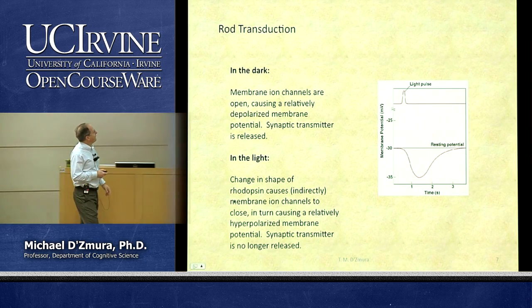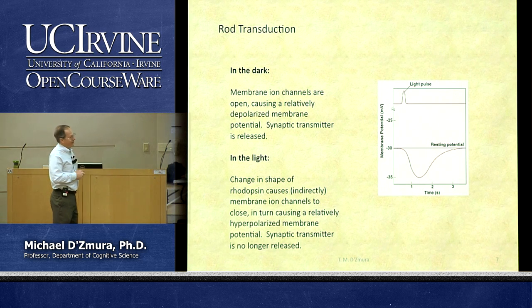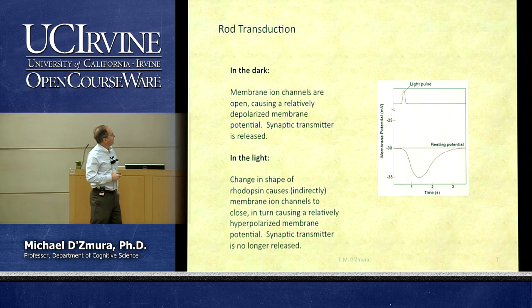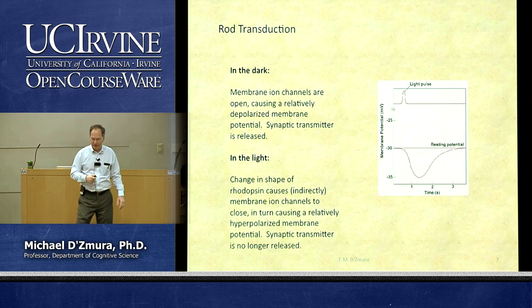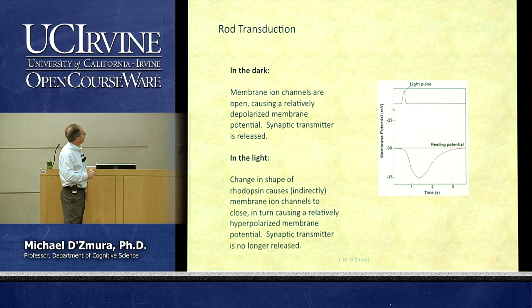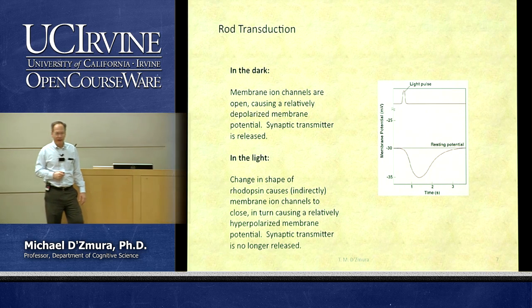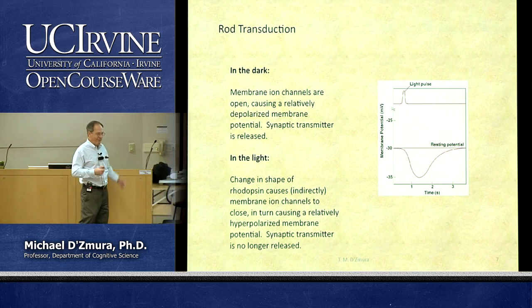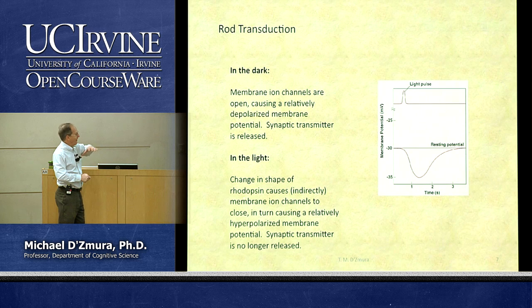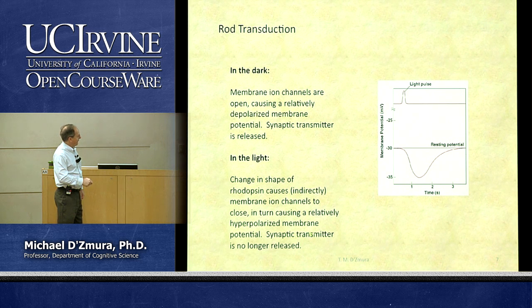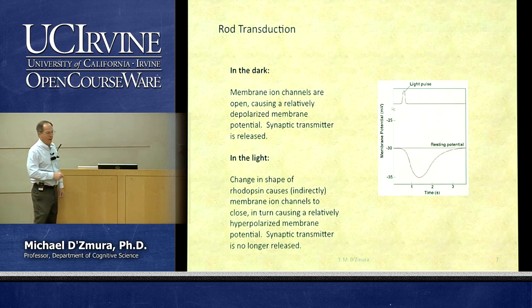In the dark, membrane ion channels are open because of the presence of cyclic GMP molecules. That means positively charged ions are entering the cell in the dark, so the cell is relatively depolarized in the dark. The result is that synaptic transmitter is released by the rod in the dark. When we shine a light, photons are absorbed, retinal changes shape, and membrane ion channels close, so the rod becomes hyperpolarized and neurotransmitter is no longer released.